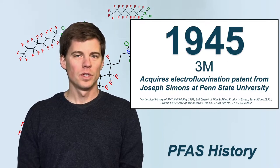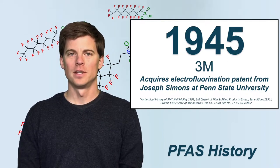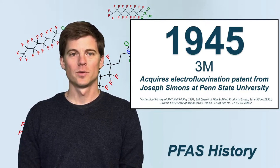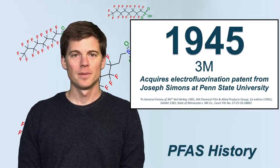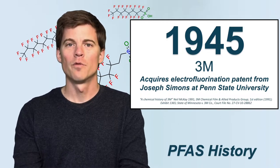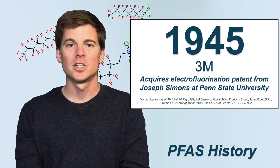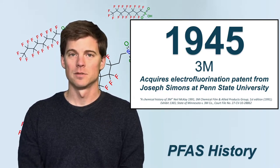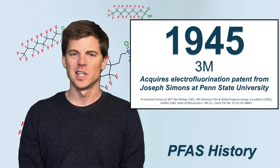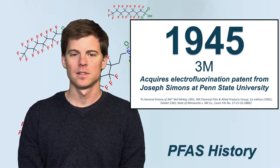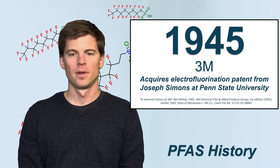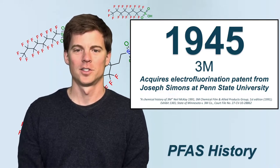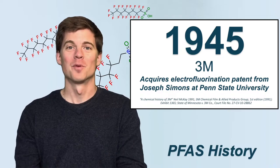While DuPont was developing Teflon, 3M was also working on fluorochemicals, in collaboration with Joseph Simons at Penn State University. Simons was the first to discover electrofluorination, which compared to previous synthesis methods was very fast and clean, though expensive. 3M acquired the patent from Simons and calls this the Simons method of electrofluorination.